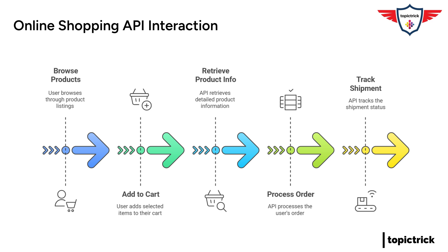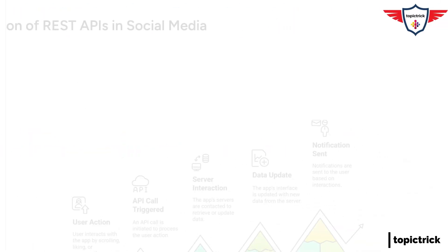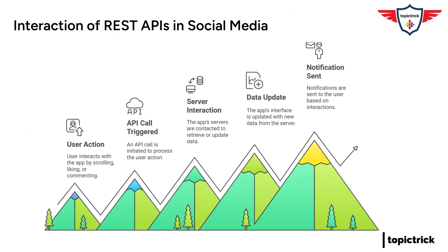Another big one is social media. Every time you scroll through your feed, like a post, or leave a comment, you're triggering API calls. These APIs allow the social media platform to retrieve data from its servers, update your feed, and send notifications — it's like a constant conversation between your phone and the social media company's servers. REST APIs are what make that conversation possible. REST has become the de facto standard for web APIs and the backbone of the modern web.